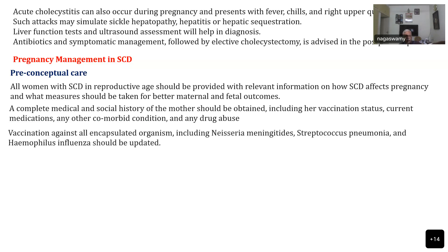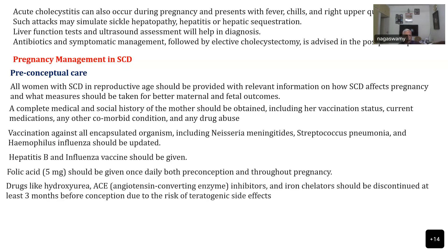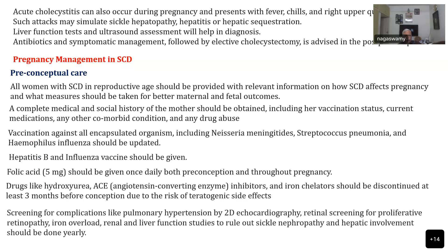Vaccination against all encapsulated organisms like Neisseria, Streptococcus, and Haemophilus should be updated. Hepatitis B and influenza vaccines should also be given. Patients should be started on folic acid, given once daily, both pre-conception and throughout pregnancy. Drugs like hydroxyurea, ACE inhibitors, and iron chelators should be discontinued at least three months before planned conception, as they can produce teratogenic effects.